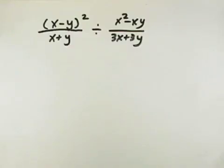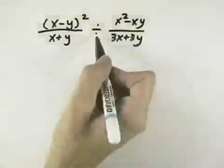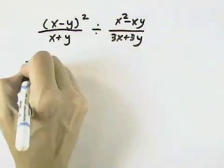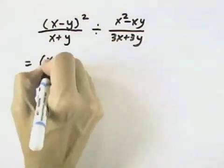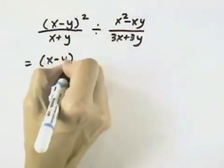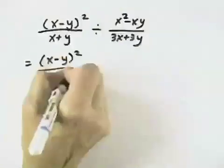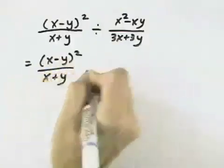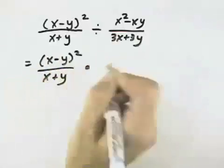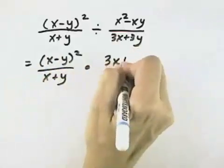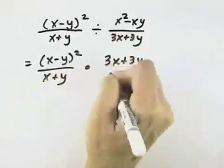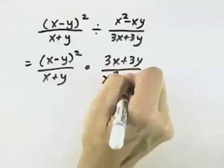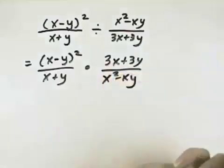Here we want to perform the indicated operation of division and simplify our answer. To do that, we leave our first fraction the way it is, but we want to flip our second fraction so that this becomes multiplication. So the 3x plus 3y is in the numerator, and the x squared minus xy is the denominator.